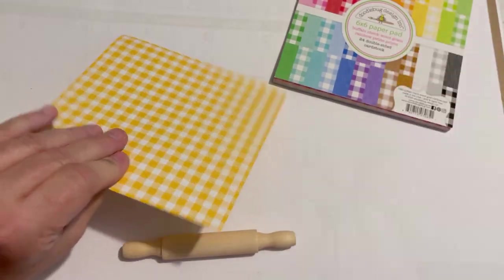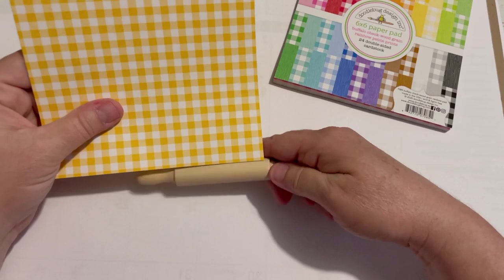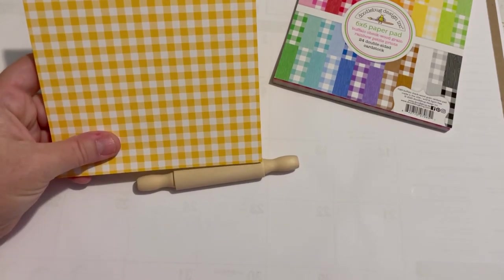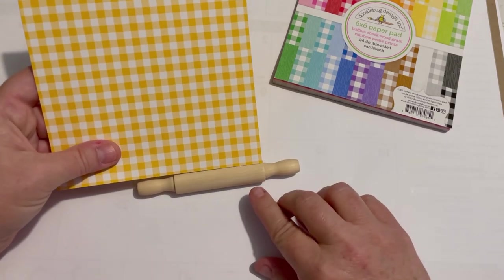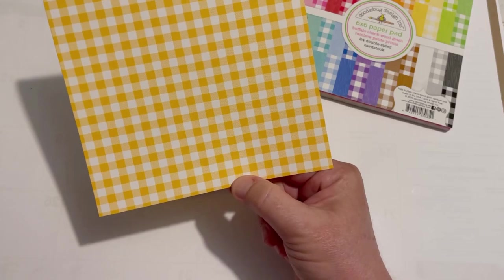They kind of go down in colors from orangey, then there's more of a yellow. I'm just going to take one of these and cut it down and make it so it can wrap around this cute little rolling pin.